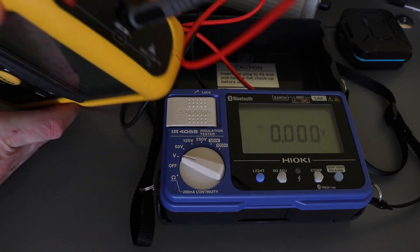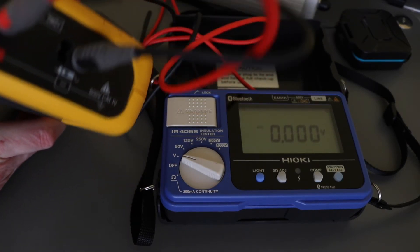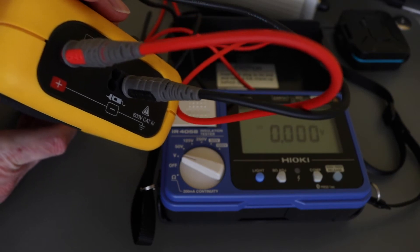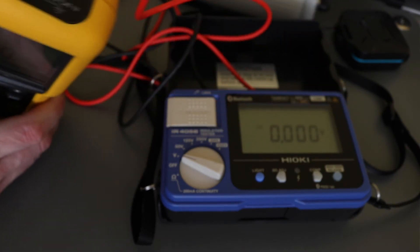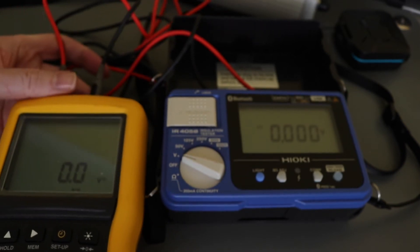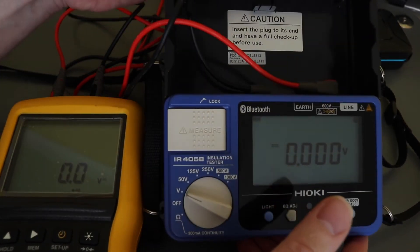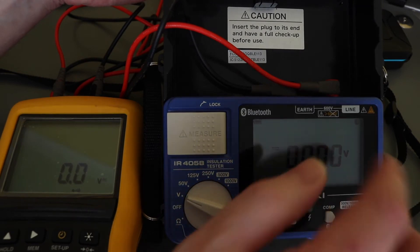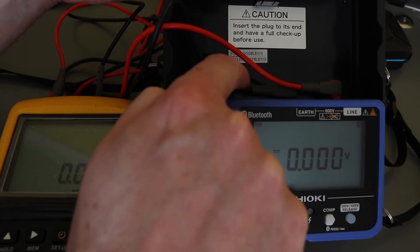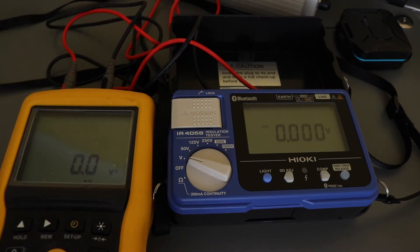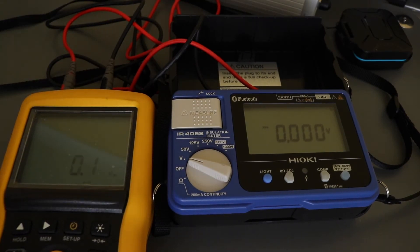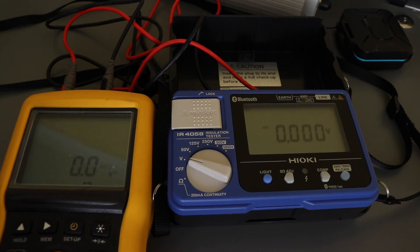You can see red lead in positive and black lead in negative, and then the same with this one. The red lead is in the line or positive, black lead is in the earth or negative. I've set this one up to put out 100 volts and this will measure the voltage.